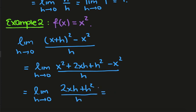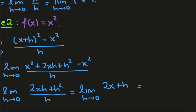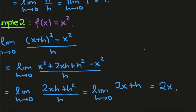The x squareds cancel, leaving the limit as h tends towards zero of 2xh plus h squared over h. Dividing every term by h gives the limit as h tends towards zero of 2x plus h. Now setting h equal to zero, we end up with 2x, so f prime of x equals 2x.